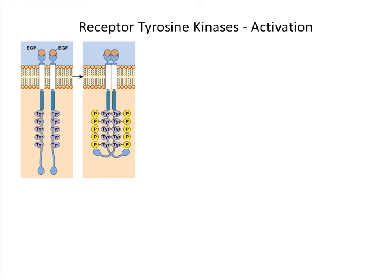Now let's talk about how the receptors are activated. On the left we have the inactive form, and on the right the active form. This figure is not from the textbook, though it resembles parts of figure 16-32. For activation, we need two subunits of the protein — two receptor proteins. When they are both bound by the ligand, in this case epidermal growth factor, they can form a dimer — a receptor dimer.